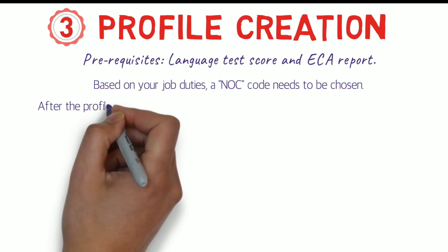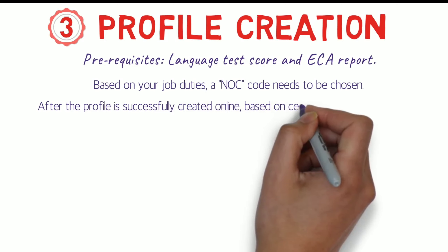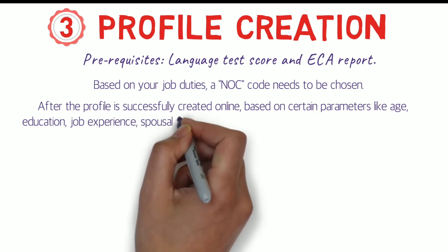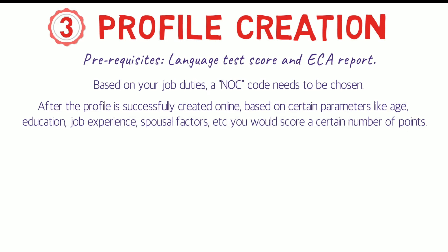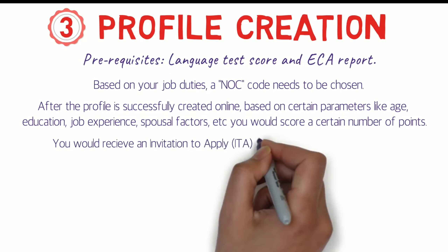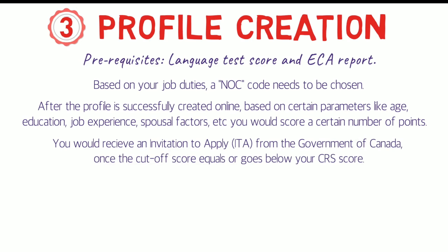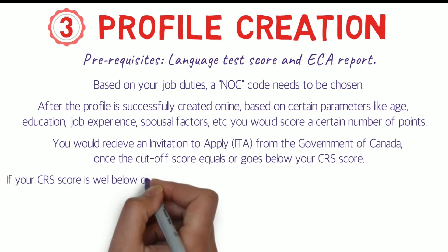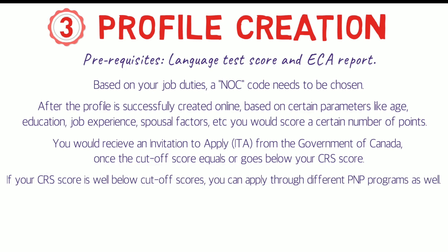After creating a profile online based on parameters like your age, education, job experience, marital status, etc., a CRS score will be calculated. The CRS, or Comprehensive Ranking System, calculates points based on all these parameters. You would receive an ITA — Invitation to Apply — from the Government of Canada if your CRS score is equal to or greater than the cut-off draw. If your CRS score is less than 400, don't worry — you can create and apply to different PNP programs. PNP, or Provincial Nomination Program, allows you to express your interest and apply to any PNP program separately.